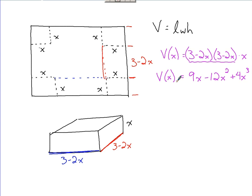That's the key with all these problems, is getting to that point in the setup. At this point we take the derivative of the volume function, which would be nine minus twenty-four x plus twelve x squared. We explore where the derivative of this volume function equals zero, so nine minus twenty-four x plus twelve x squared is going to equal zero.